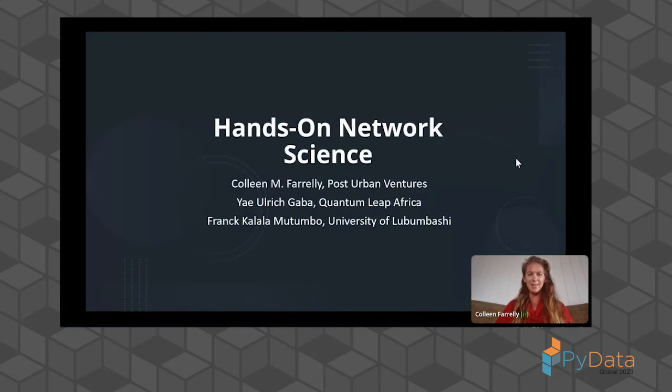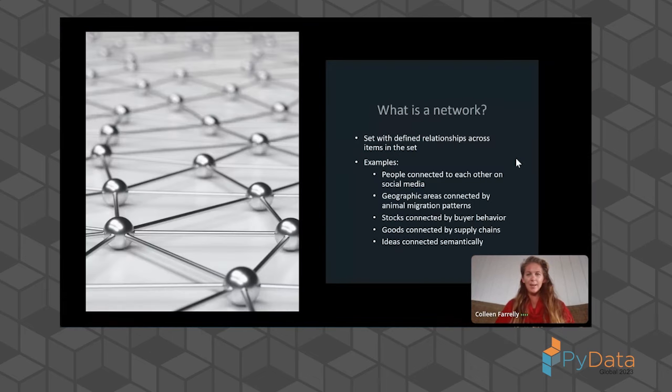Welcome to Hands-On Network Science. Let's start with what is a network. A network is a set of defined relationships across items within a set. There are a lot of different networks that can exist. For instance, we can have people connected to each other on social media, geographic areas connected by animal migration patterns, stocks connected by buyer behavior or goods connected by supply chain, and even ideas or parts of speech connected semantically. There are lots of different networks out there, and most data can be represented as a network.